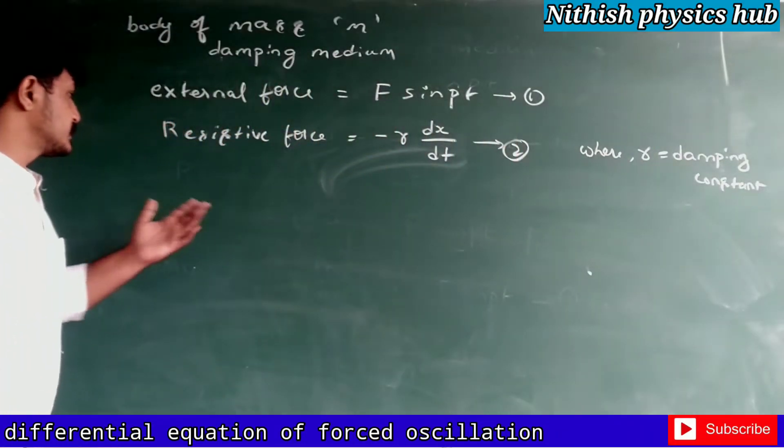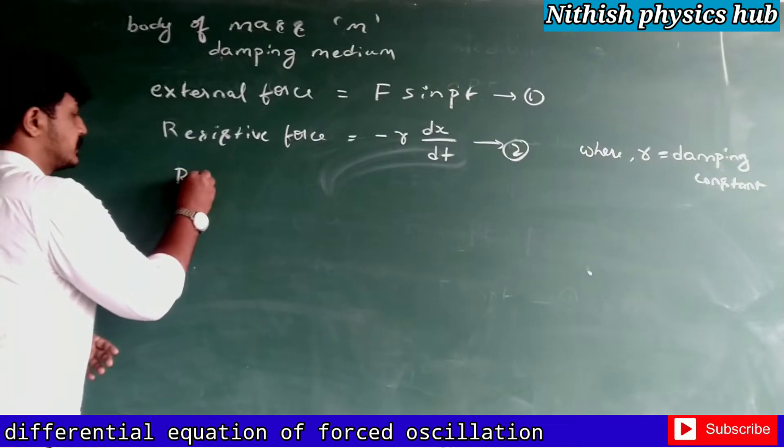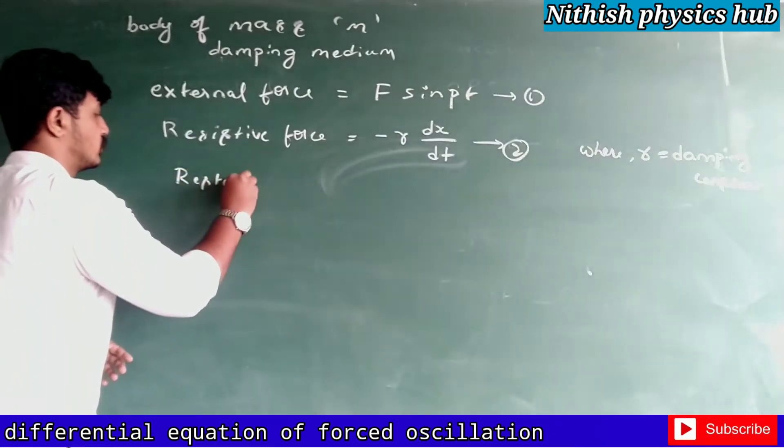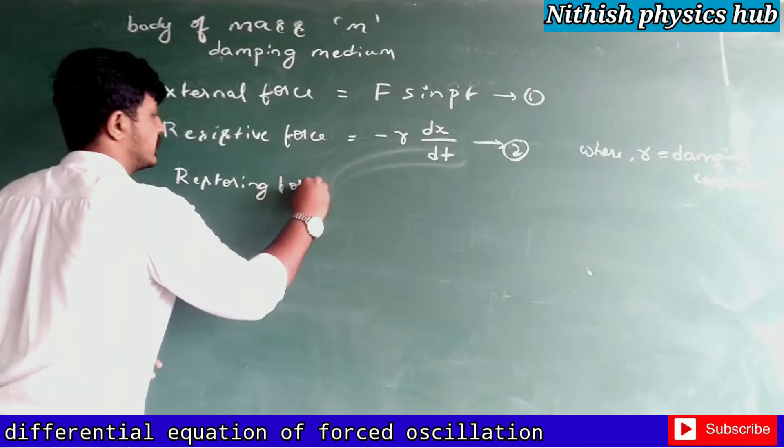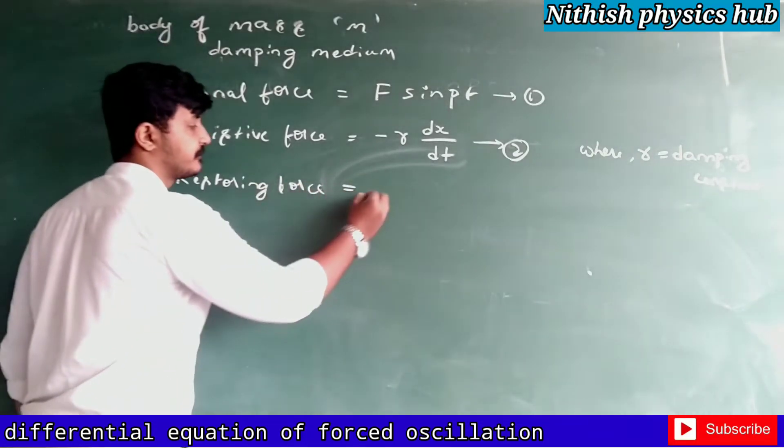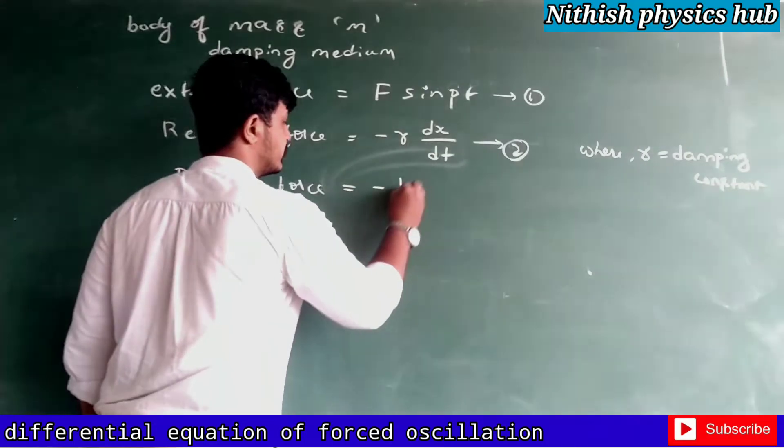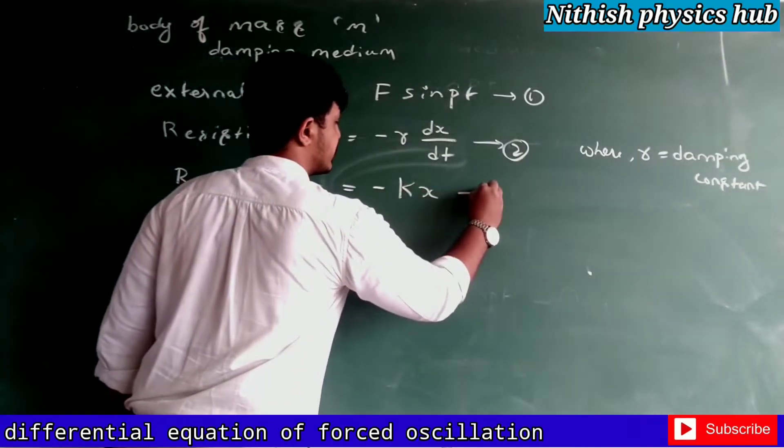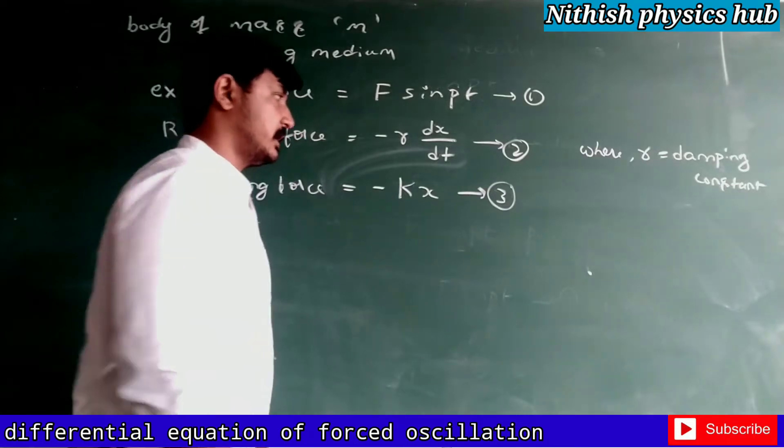Now since the restoring force is also acting on a body, it can be given by negative of k into x. Take it as equation number 3.